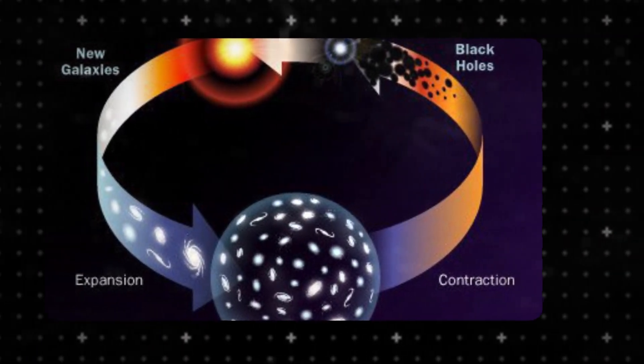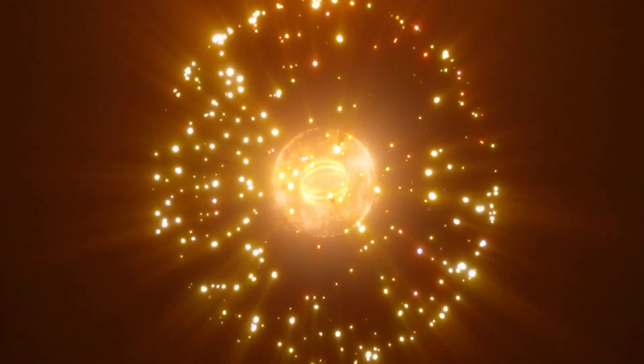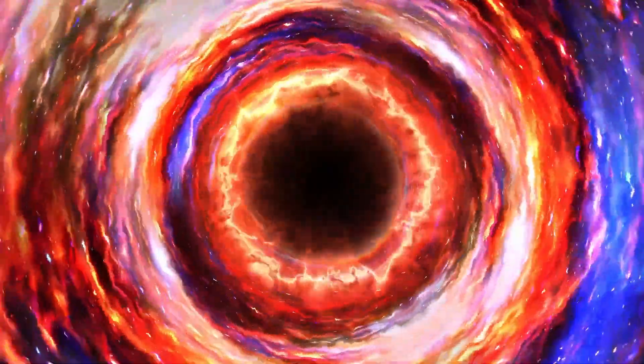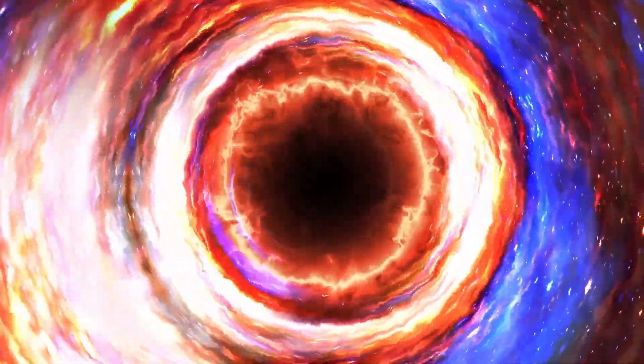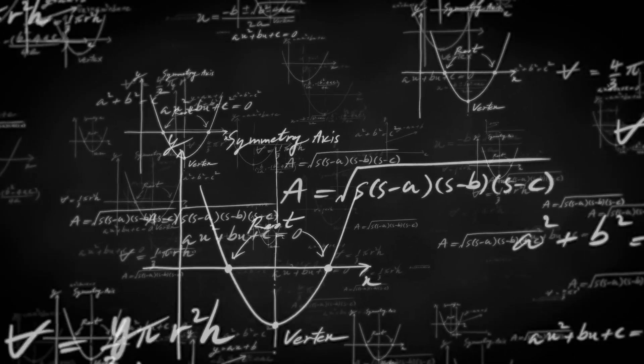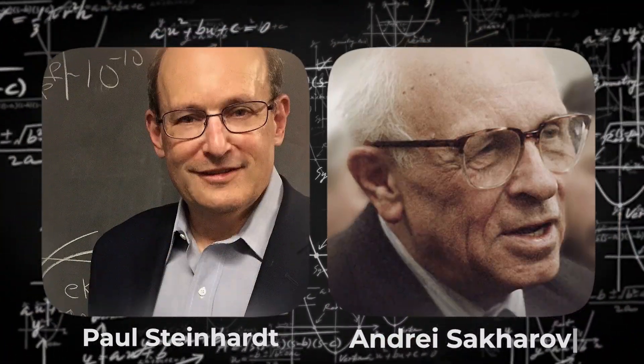Another scenario is the big crunch. According to this hypothesis, dark energy might weaken and cause the universe to collapse. Galaxies will converge, temperature and pressure will rise, and matter will turn into plasma. Atoms will disintegrate, and the universe will return to a singularity, potentially leading to a new Big Bang. This idea is supported by theorists like Paul Steinhardt and Andrei Sakharov, but it requires further evidence.